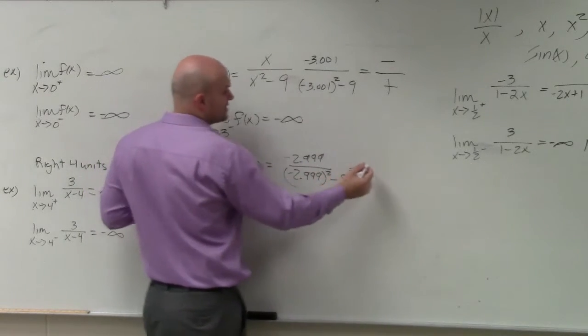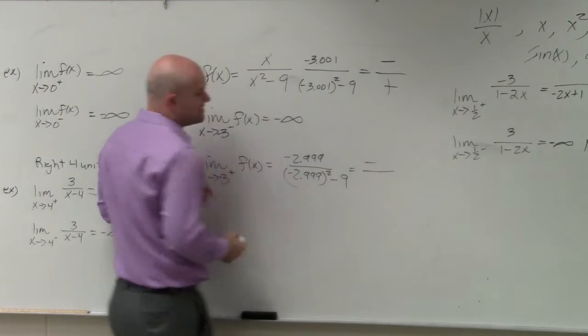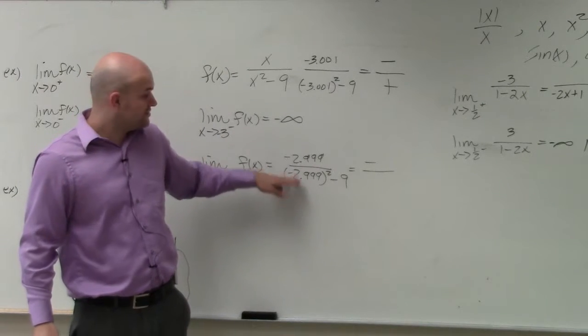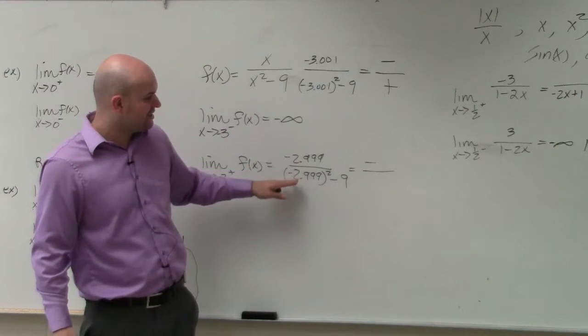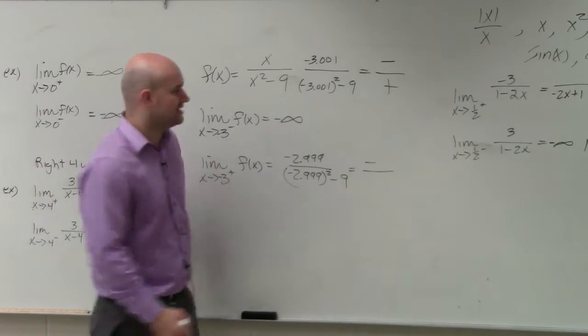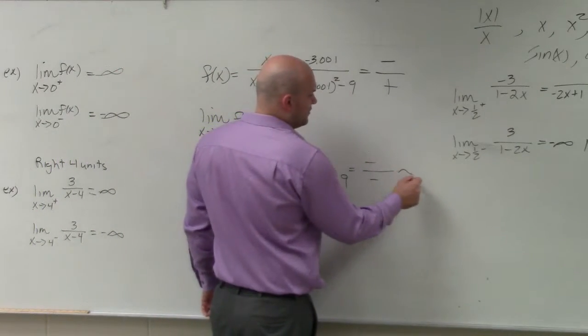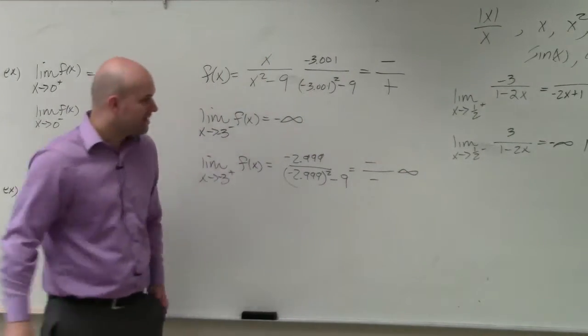Again, our numerator is negative. In our denominator, we have a number smaller than 3 squared. So a number smaller than negative 3 squared minus 9 is going to give us a negative, which will tell us it's going to go to positive infinity.